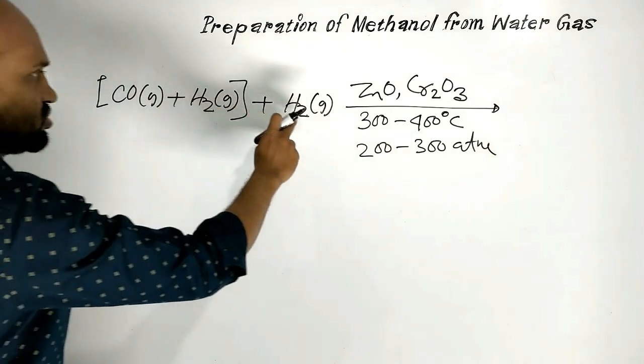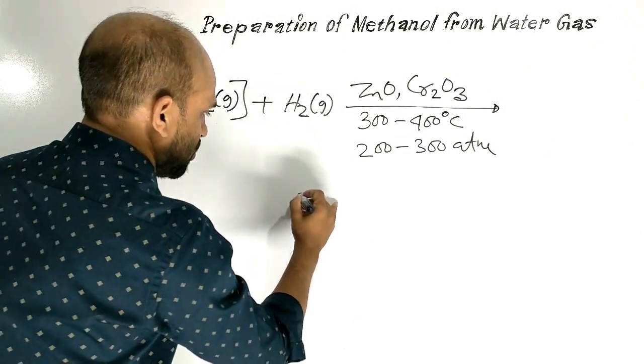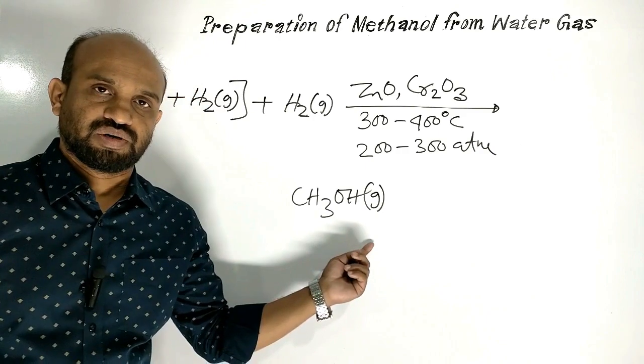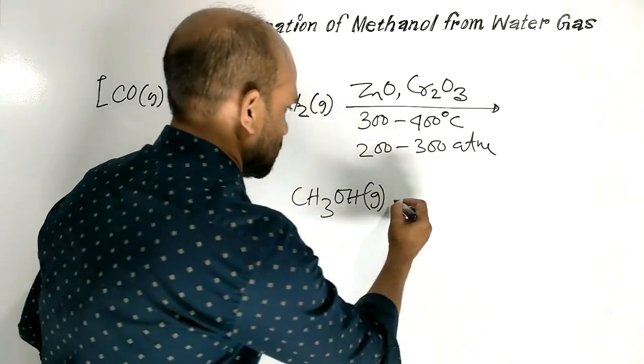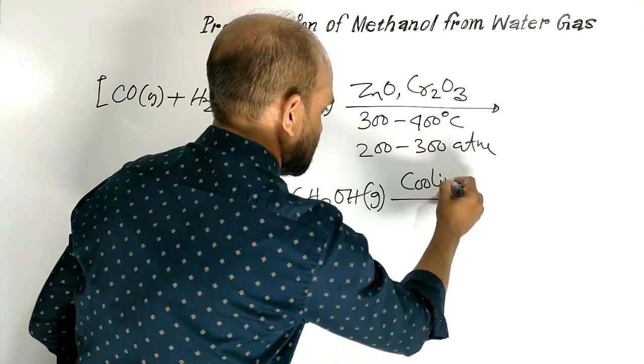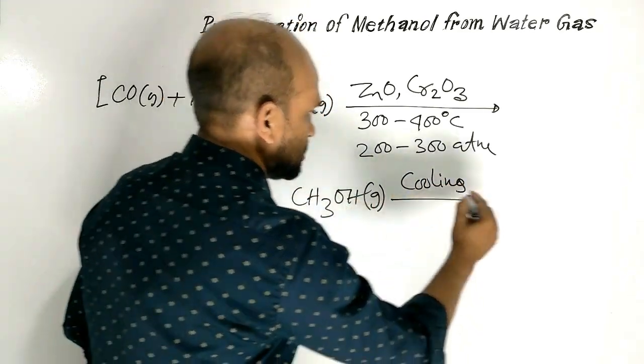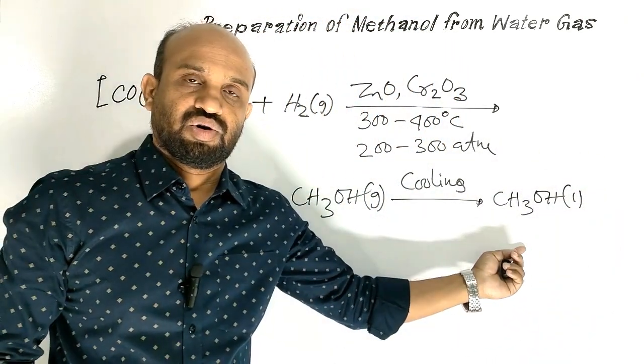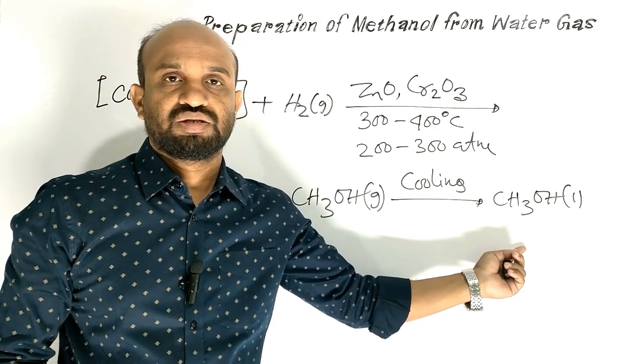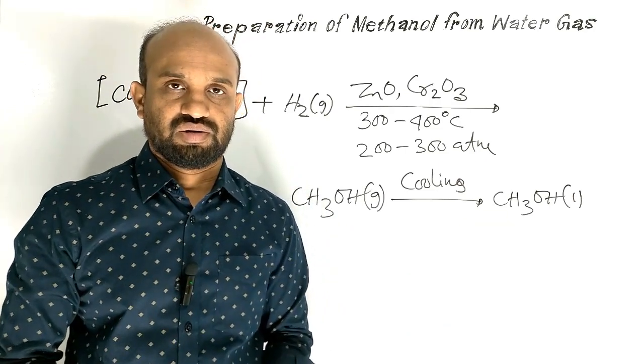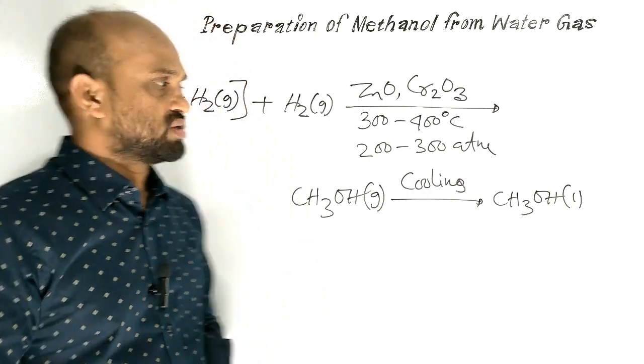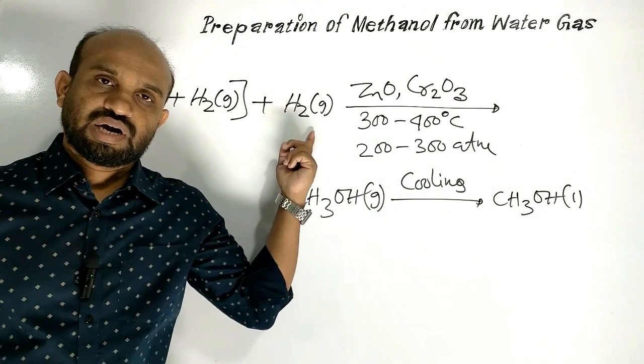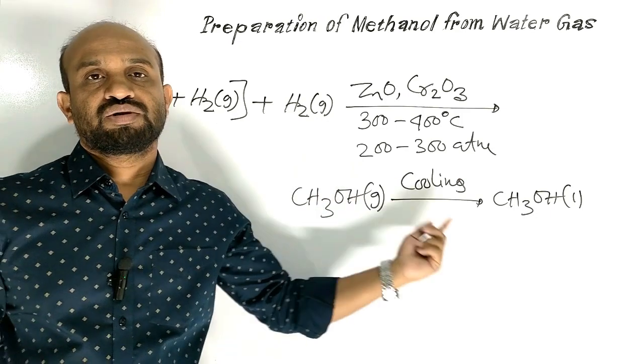Water Gas reacting with Hydrogen Gas forms Methanol Vapor. Methanol Vapor on cooling turns into Methanol or Methyl Alcohol, which is also called Carbinol. This is the reaction by which Water Gas undergoes hydrogenation and forms Methanol.